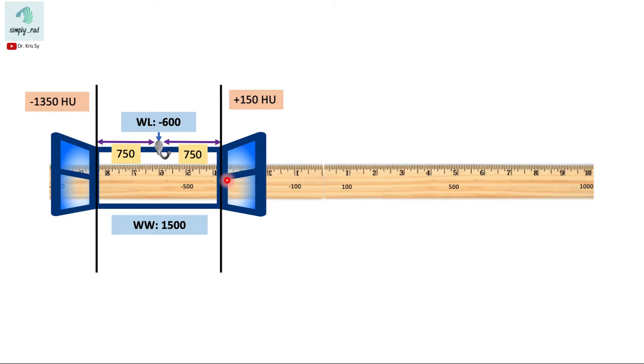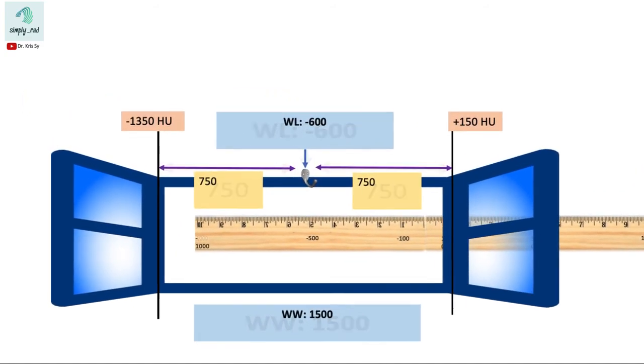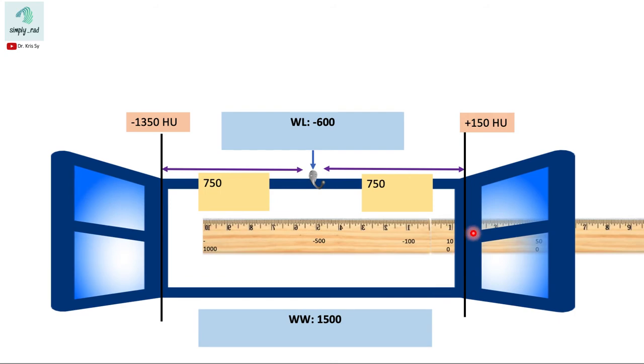So let us now adjust the ruler on this scale. Since the upper part here should reflect positive 150 Hounsfield units, which should be right here.